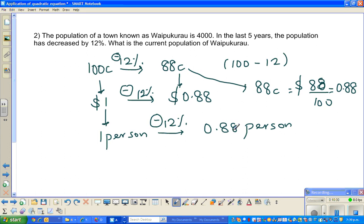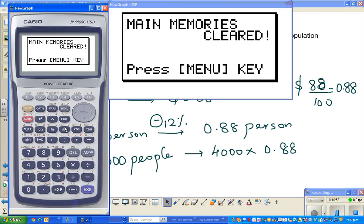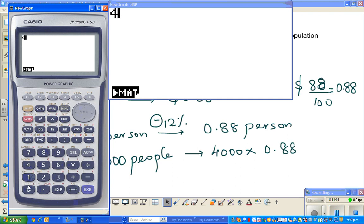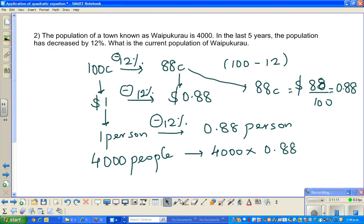Now listen to my argument. If one person was there and the population reduced by 12%, you would have 0.88 persons. It doesn't make sense in people, but mathematically it does. If for one person it became 0.88 person, you had 4,000 people. You had to multiply by this factor, which is 0.88, which is 4,000 times 0.88 equal to 3,520 people are there now.